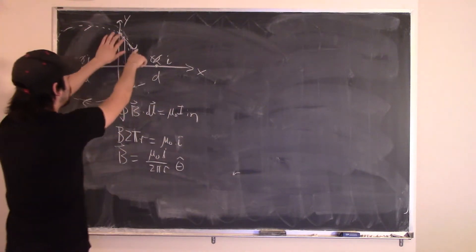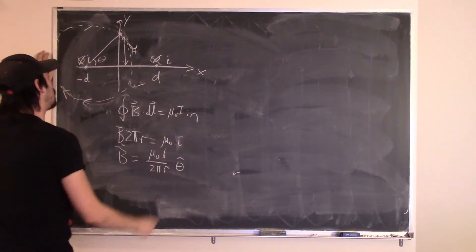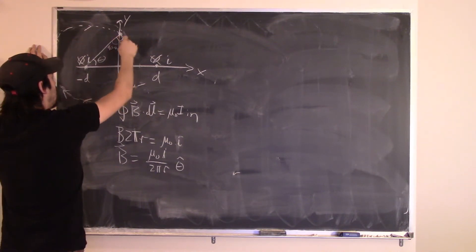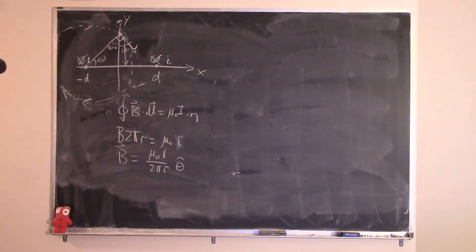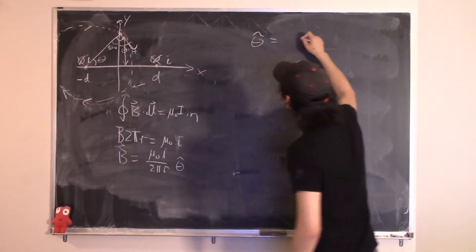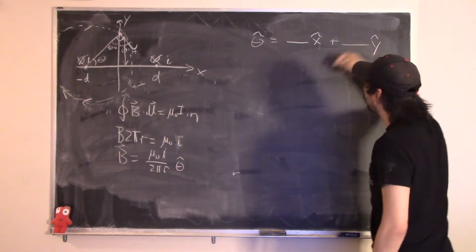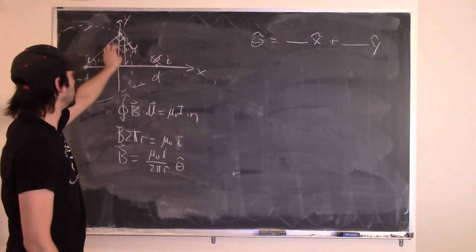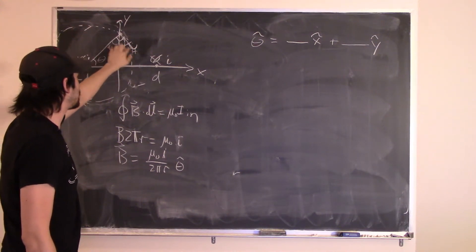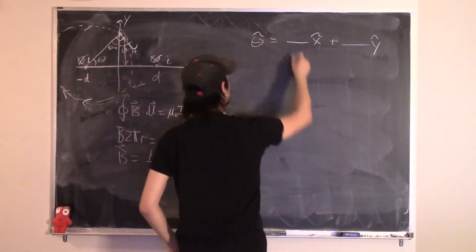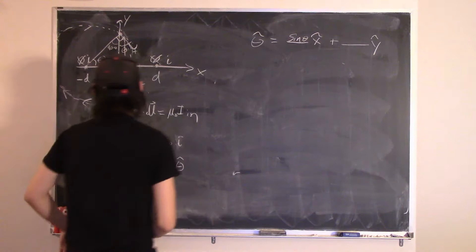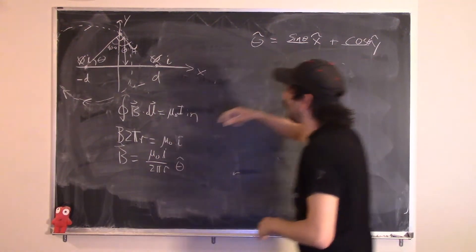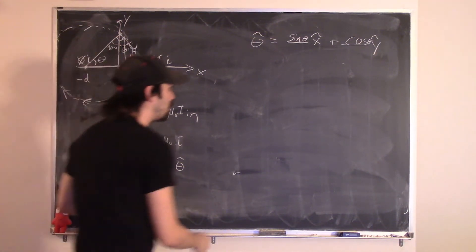To write theta-hat in components: theta-hat equals (sine of theta) x-hat minus (cosine of theta) y-hat. The x component is opposite to theta, so it's sine of theta; the y component is adjacent but in the negative direction, so it's minus cosine of theta. With r = sqrt(D² + h²), sine θ = h/r and cosine θ = D/r.